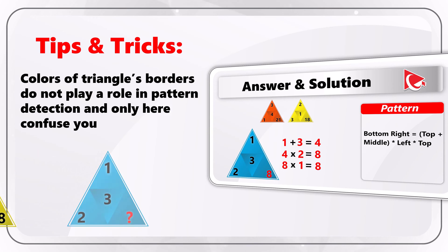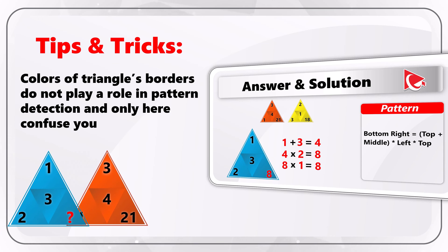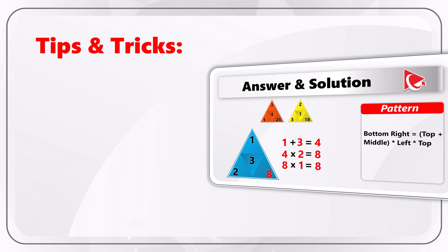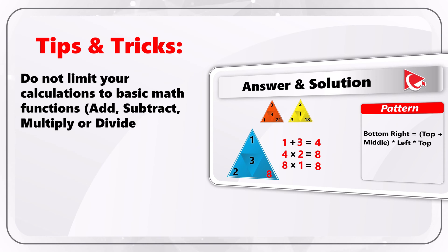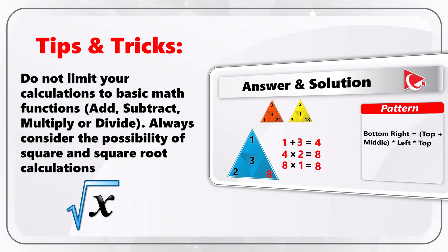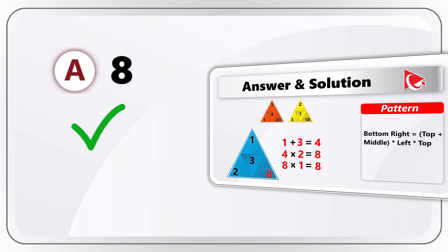Let me give you some tips so you can solve these types of questions on a real test on your own. If you look closely at the triangles, they are three different colors — but colors do not play a role in the pattern detection in this particular case, and they are only there to confuse you. Another tip: especially if you see small single-digit numbers, do not limit yourself to addition, subtraction, multiplication, and division. Always consider the possibility of square and square root calculations. The correct answer here is choice A: 8.